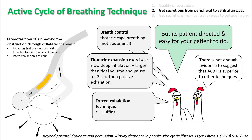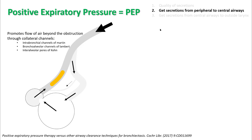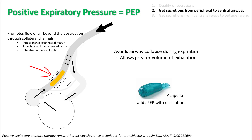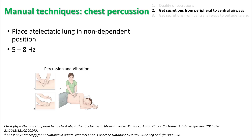There is not enough evidence to suggest active cycle breathing technique is superior to other techniques. However, it is patient-directed and controlled, and easy for your patient to do. Positive expiratory pressure can support breathing techniques because it avoids airway collapse during expiration by creating positive end-expiratory pressure, and it allows greater volume for exhalation. Instruments like the Acapella add positive expiratory pressure with oscillation, helping mobilize secretions even better. Manual techniques like chest percussion can loosen secretions — ensure the atelectatic lung is in a non-dependent position and use vibration at five to eight hertz.